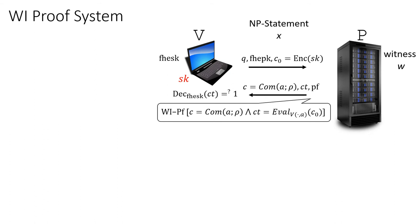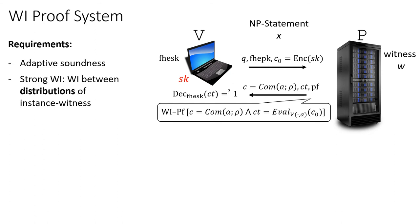For the WI proof system, we want adaptive soundness. The original delegation scheme does not need to be adaptively sound, and the final scheme with witness indistinguishability is also not going to be adaptively sound. Nevertheless, the WI proof system used inside our construction must have adaptive soundness, because the statement being proven is only determined after the prover has seen the first message of the verifier — so the statement is chosen adaptively after the WI proof parameters have been selected.